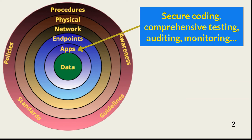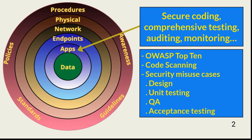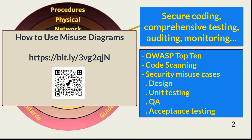Application security, as with all layers in this defense in-depth model, starts in the design phase. Applications must be securely coded, comprehensively tested, and audited over time. Application security considerations include using the OWASP Top 10 to assess web application attack surfaces for the presence of likely vulnerabilities often leveraged by threat actors, using code scanning tools to identify likely vulnerabilities, and including security misuse cases in design reviews as well as in unit, QA, and acceptance testing.